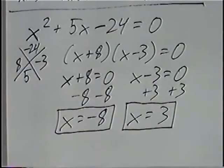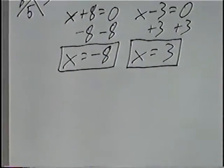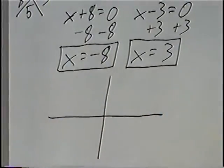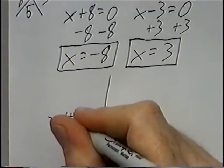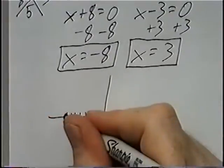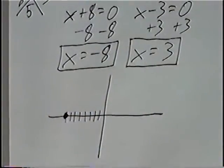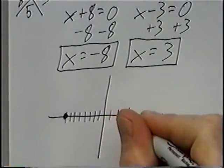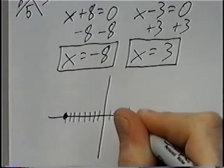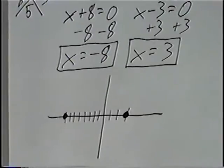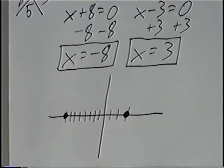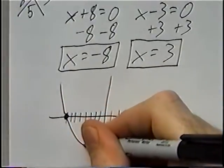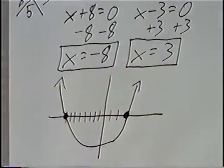After we solve, we can graph the quadratic equation using these two answers. Drawing the xy-axis, our first answer x equals negative 8 places a point at negative 8 on the x-axis with y equal to 0. And x equals 3 also has y equal to 0. Since this is a quadratic equation with positive x squared, we know the graph is a parabola that passes through both points and opens upward.